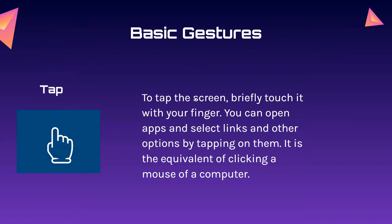Let's begin with the tap. To tap the screen, briefly touch it with your finger. You can open apps and select links and other options by tapping on them. It is the equivalent of clicking a mouse on a computer.